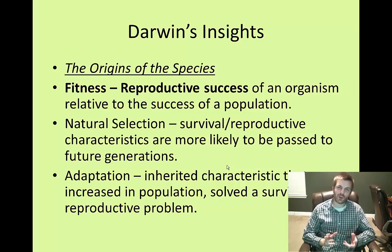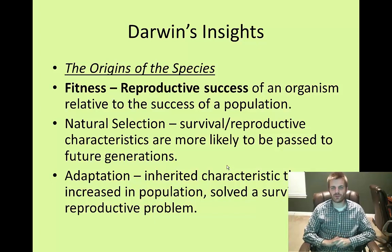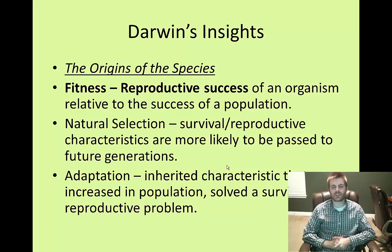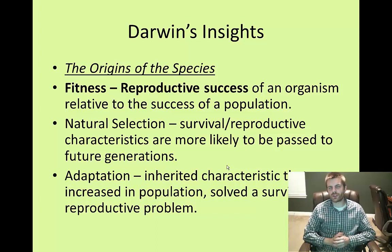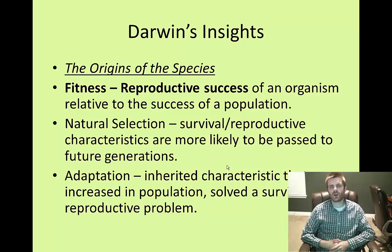An organism's fitness is based on how likely it is that they are able to reproduce. Natural selection is the idea that certain survival and reproductive characteristics are more likely to be passed to future stronger generations — basically, the survival of the fittest; only the strong survive. Adaptation is an inherited characteristic that increases in a population because it solves some type of survival or reproductive problem, ultimately helping an organism become stronger and ensuring the continuance of that species.